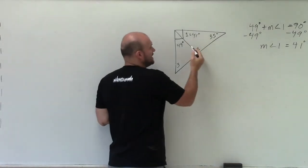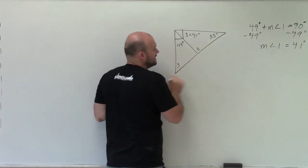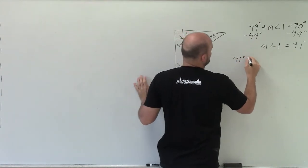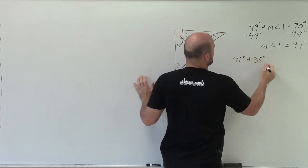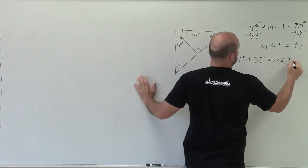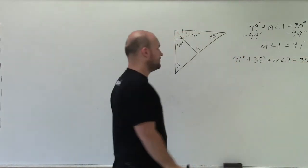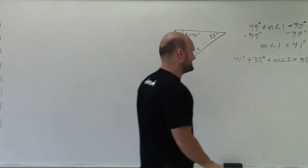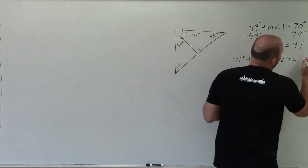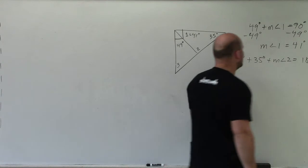states that all the interior angles of a triangle add up to 180. So therefore I can say 41 degrees plus 35 degrees plus the measure of angle 2 is equal to—oh, sorry—equal to 180 degrees. It's my first video of the morning. Okay.